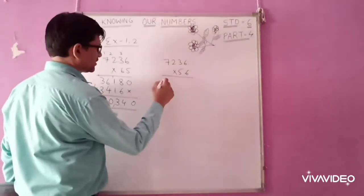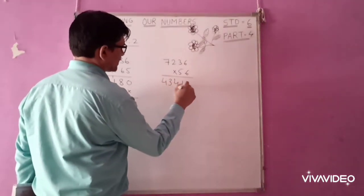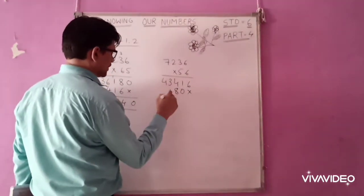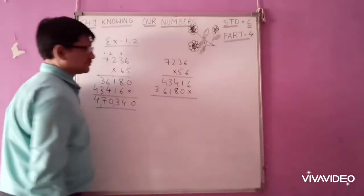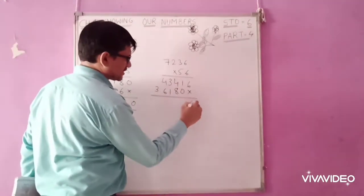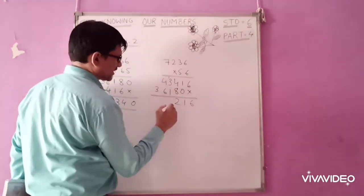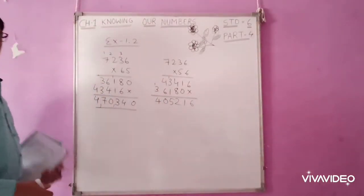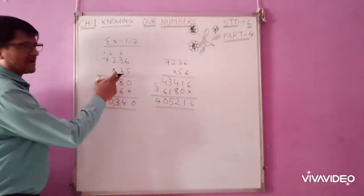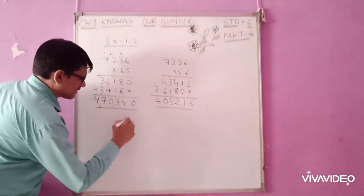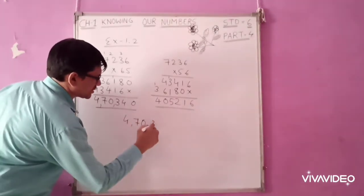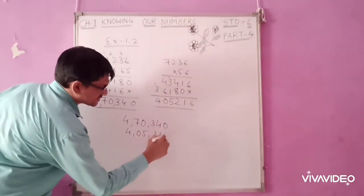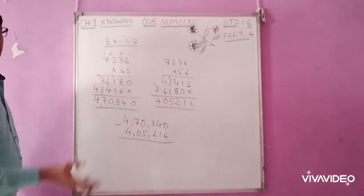Now, multiply it here. 4, 3, 4, 1, 6. Again 4, 3, 4, 1, 6. Now add the numbers. 6, 1, 2, 1 carry. 5, 6, 0, 1. Now, here, if you see, the number multiplied by 65 is greater. So subtract that. 4,70,340. Next, 4,05,216. How much was the answer greater?